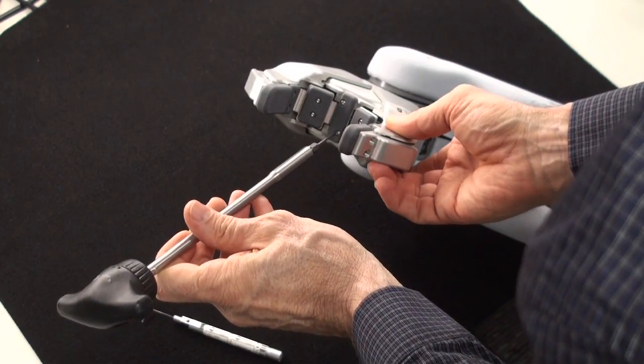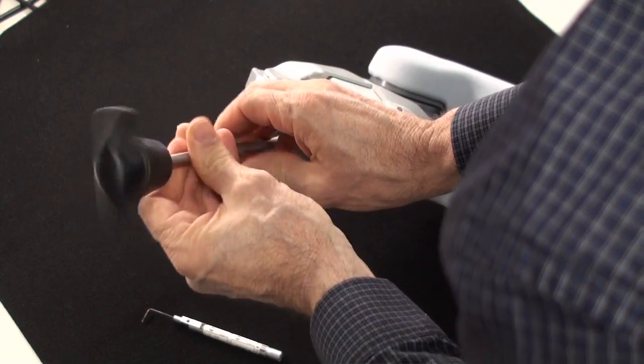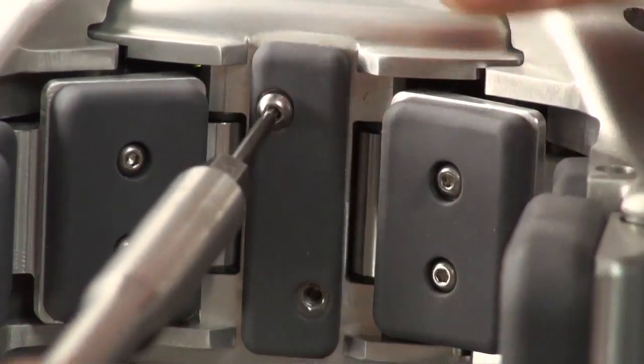Using the T handle and the 1.5 millimeter bit, we're going to remove initially the center pad and then the two side pads.